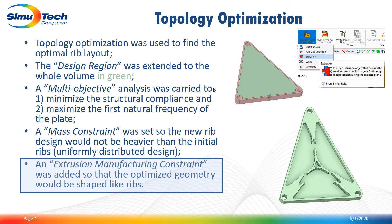We have a maximum total deformation of about one millimeter and the first natural frequency was around 400 Hz. To find the optimized RIP layout, a topology optimization analysis was carried out where an extrusion manufacturing constraint was added in order to get a constant cross section along a specific extrusion direction. A multi-objective analysis was also carried out to first minimize structural compliance and second to maximize the first natural frequency of the plate.